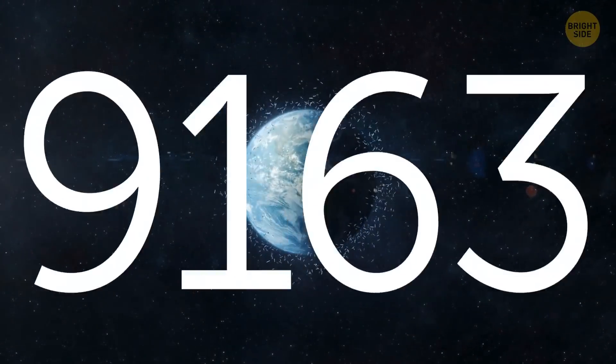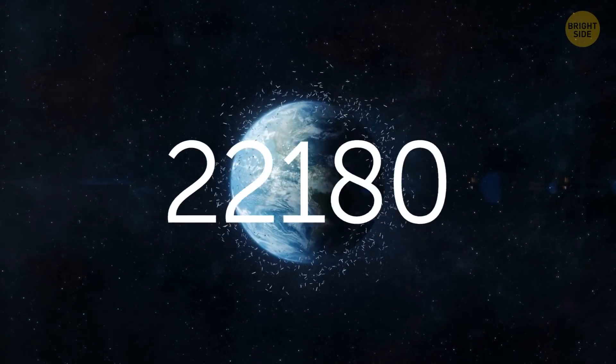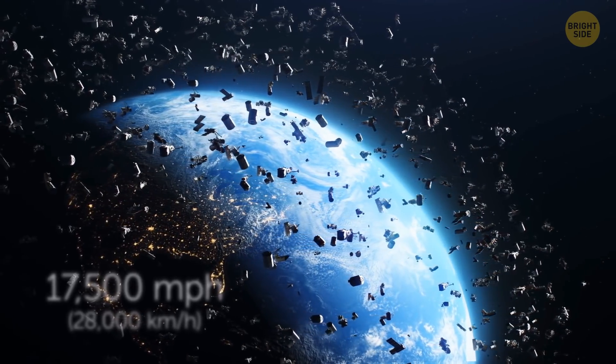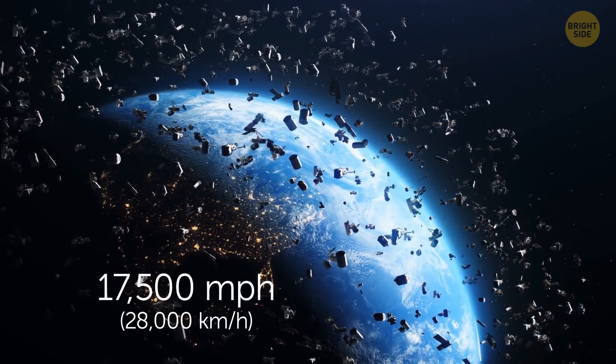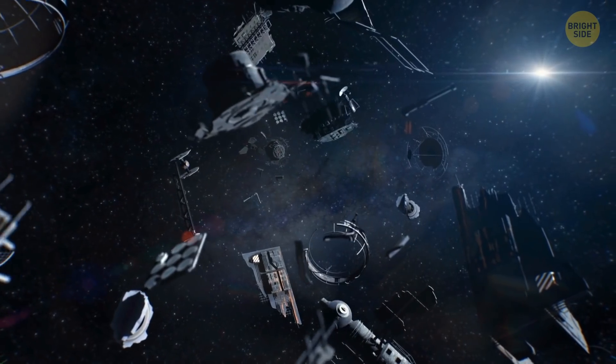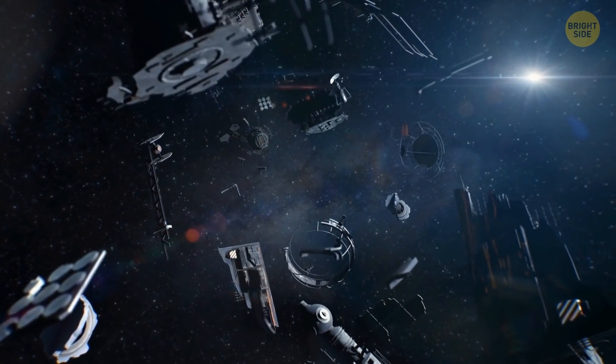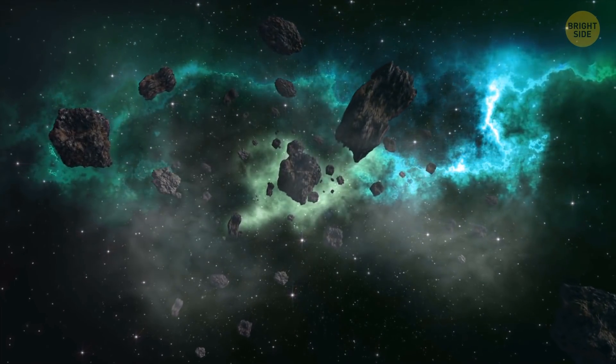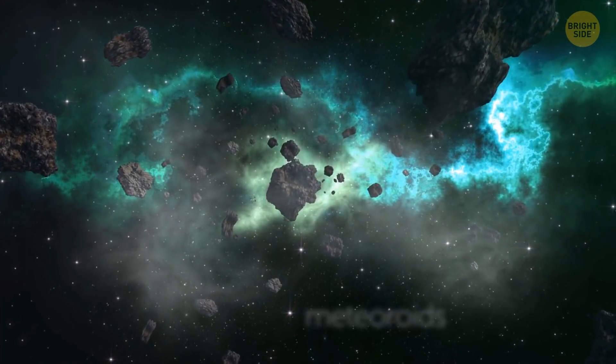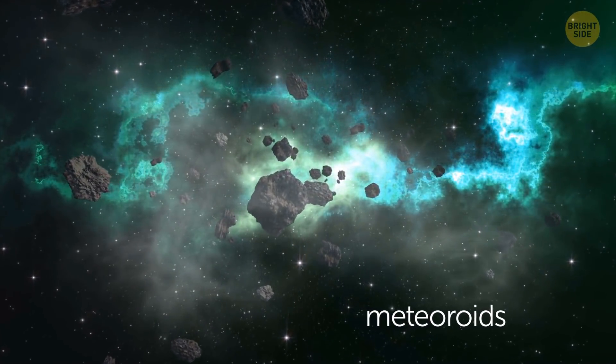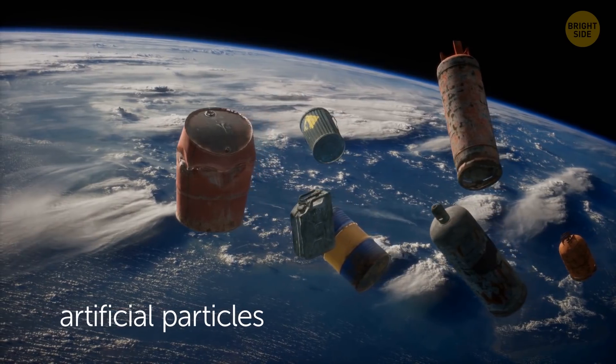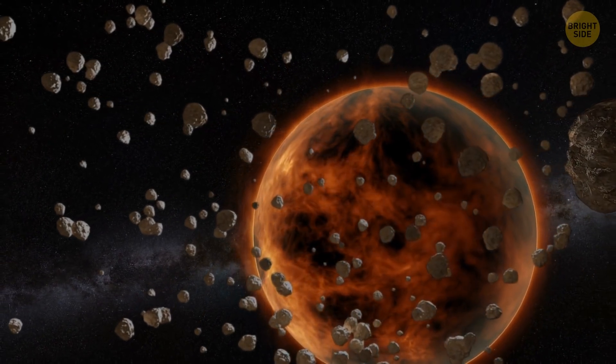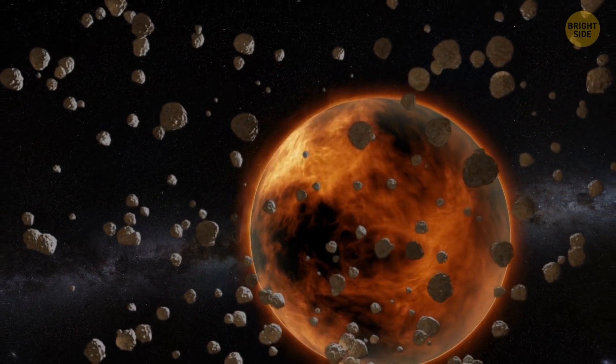There are more than 23,000 pieces of so-called space junk bigger than a softball floating above our planet at speeds up to 17,500 miles per hour. And there are 500,000 pieces in general, some of them the size of a marble. Space waste is generally debris made up of natural particles called meteoroids and artificial particles, like things we make on Earth. Meteoroids orbit the sun, while the majority of human-made debris orbits our planet.